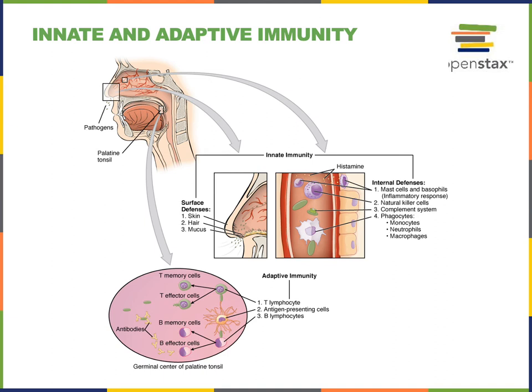There are also internal defenses that are part of our innate immunity. This includes leukocytes such as mast cells and basophils. Mast cells are found in most connective tissue and can respond to infection, releasing inflammatory mediators such as histamine that stimulate inflammation to bring more leukocytes in to help defend against infection. Basophils provide a similar function, releasing histamine to activate the inflammatory response, although basophils are found circulating in the blood.